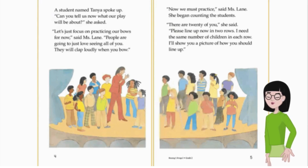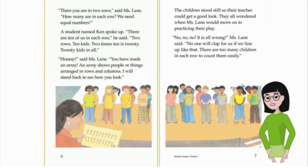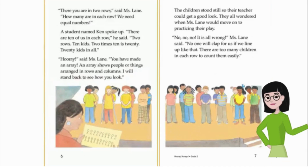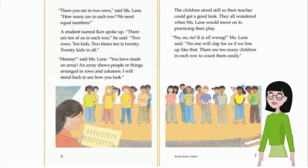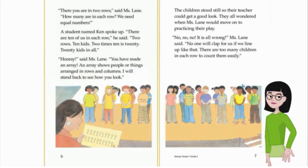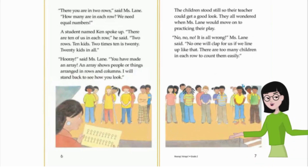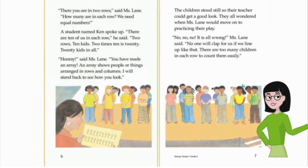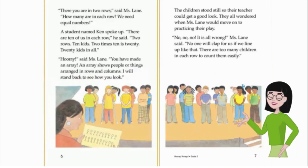'I'll show you a picture of how you should line up. There you are in two rows,' said Ms. Lane. 'How many are in each row? We need equal numbers.' A student named Ken spoke up. 'There are 10 of us in each row,' he said. 'Two rows, 10 kids. Two times 10 is 20. 20 kids in all.' 'Hooray!' said Ms. Lane. 'You have made an array.'